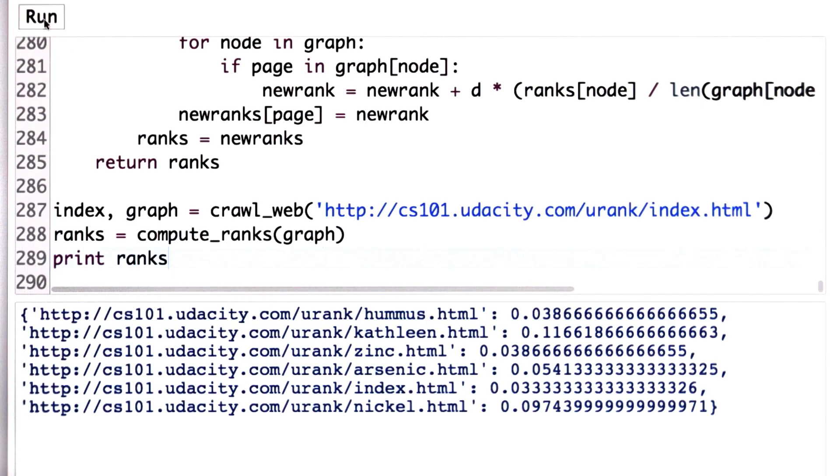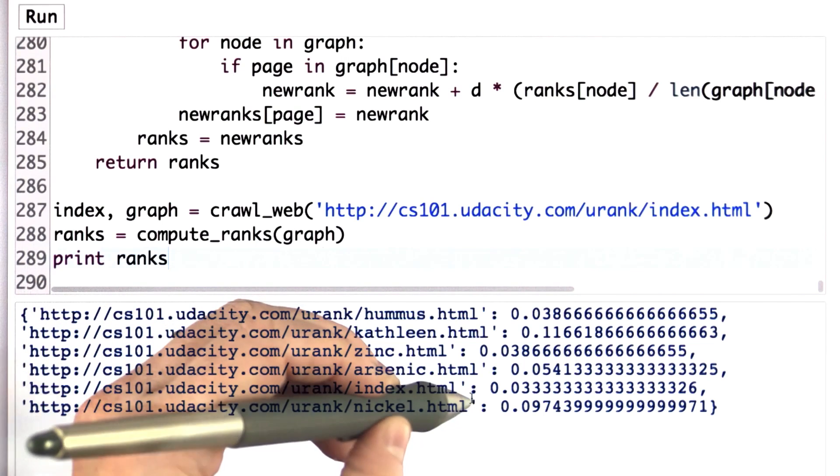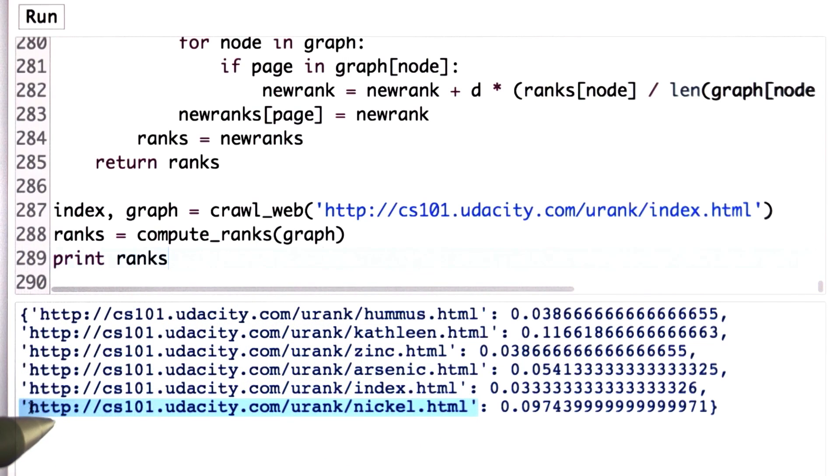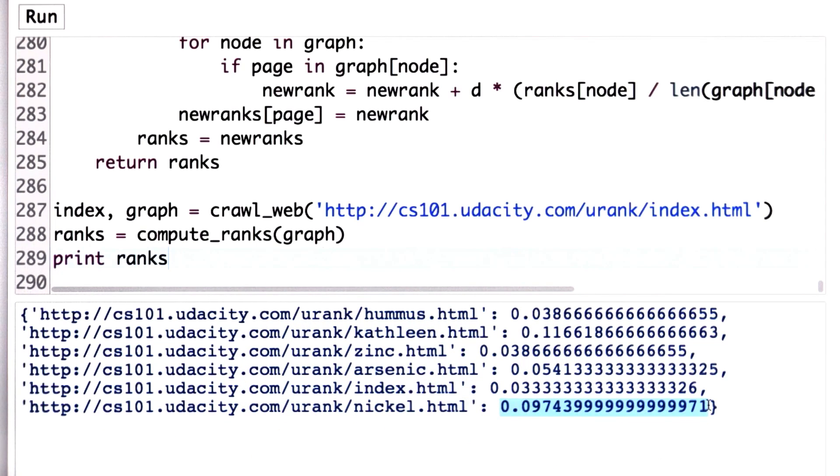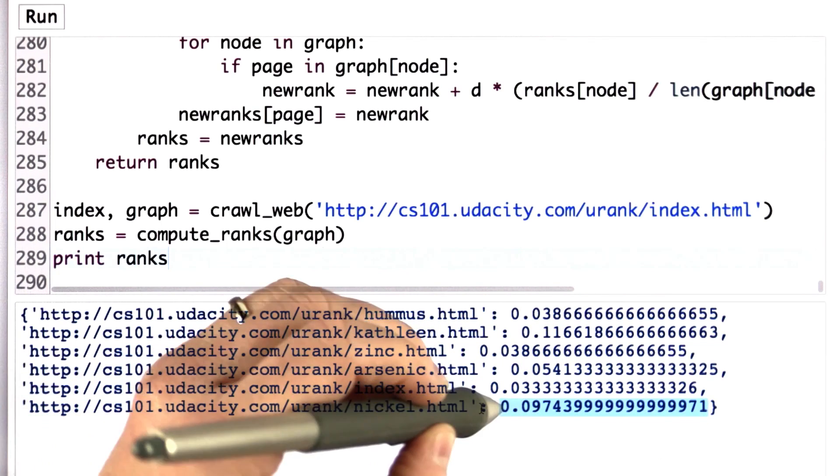And we can print out the result in ranks to see the page ranks. So here's what we get. So we get a dictionary for each URL that we crawled. We have an entry where we have the URL followed by each page rank as the value. So let's see if the ranks that we get make sense.